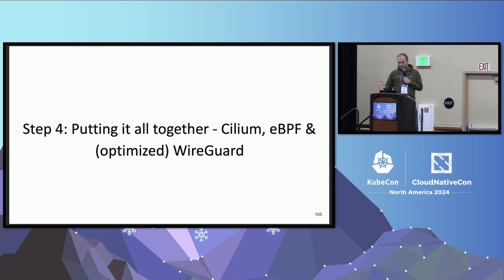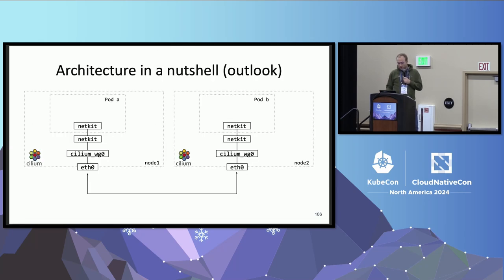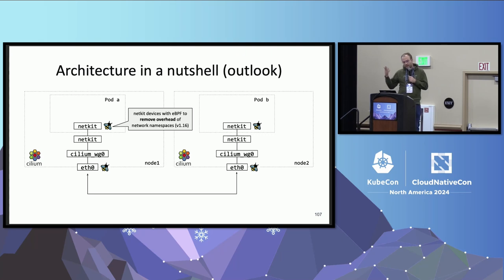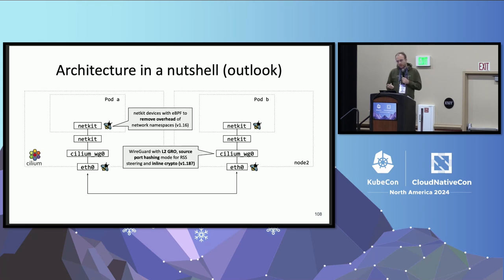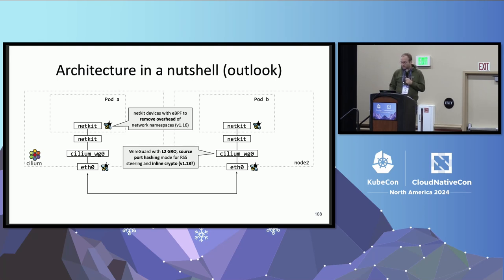Putting it all together — Cilium, eBPF, and our optimized WireGuard — here is the high-level architecture. You have NetKit devices connecting the pods, from last year's talk where we replaced veth devices with NetKit to get better performance and remove network namespace overhead, already in Cilium 1.16. In addition, for WireGuard we have the L2GRO optimization, the source port hashing implementation, and inline encryption for better scalability. This is what we are planning to get into Cilium and into the Linux kernel, potentially in Cilium 1.18.